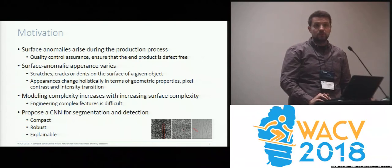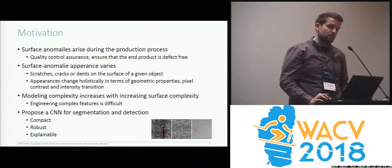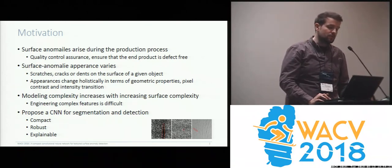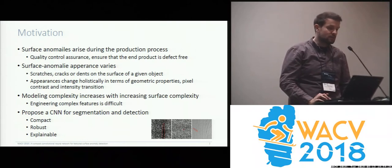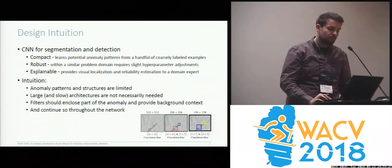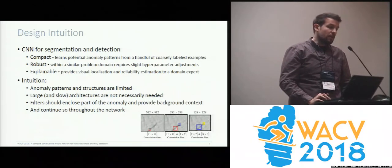Modeling complexity in general increases with increasing surface complexity. Here we propose a CNN for segmentation and detection which is compact, robust, and explainable.